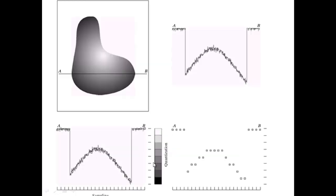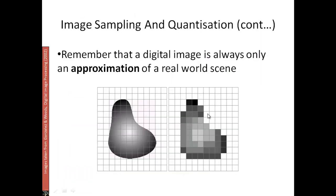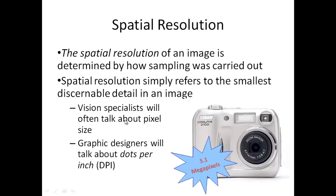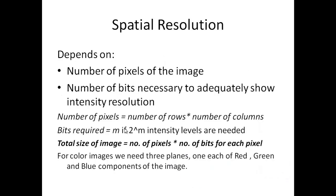Spatial resolution of an image is determined by how sampling was carried out. It refers to the smallest discernible detail in the image, also referred to as DPI. Spatial resolution depends on the number of pixels (rows × columns) and the number of bits needed for intensity resolution. The total storage size equals the number of pixels multiplied by the number of bits per pixel, where 2^m intensity levels require m bits.